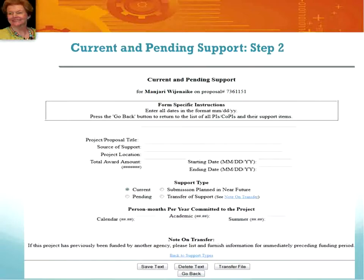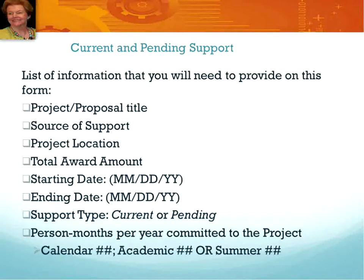If this is your first grant, you may have only one current and pending support form for each person. However, check to make sure these individuals are not working on other funded projects such as Department of Labor, state-funded grants, or foundation-funded grants that will need to be reported. There is a template in Fastlane for preparing current and pending support forms. The process goes more quickly if you collect all the information you need prior to completing the form. Check and double-check to make sure the information you submit in the current and pending support form is consistent with information you provide elsewhere in the proposal — the budget, for example, is one place where you will talk about the time commitment of personnel.